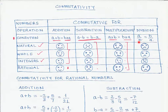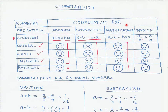As shown by the sad smiley faces here, all these number types do not follow the commutative property for division. To conclude: all four types of numbers — natural numbers, whole numbers, integers, and rational numbers — follow the commutative property under addition and multiplication, but do not follow the commutative property under subtraction and division.